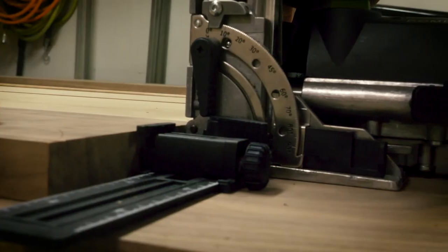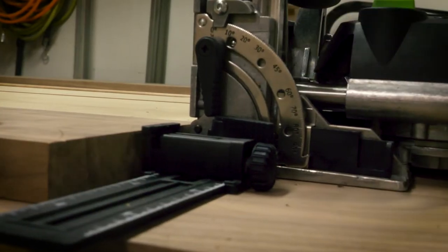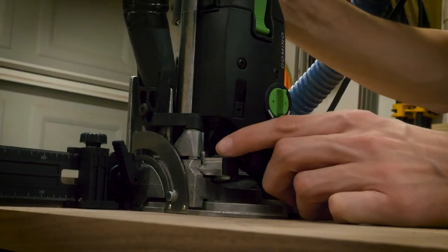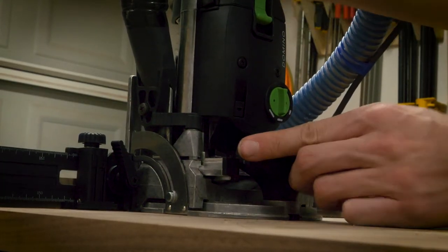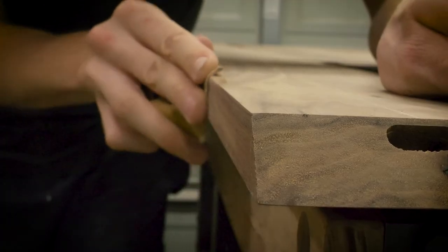I cut the rest of the dominoes and I went ahead and cleaned up the rest of the insides of the panels with the random orbital sander and some hand sanding to knock down the edges and make everything look nice and neat.